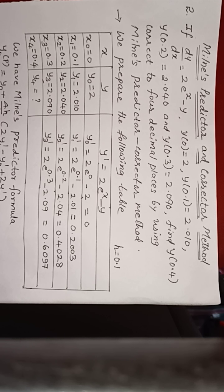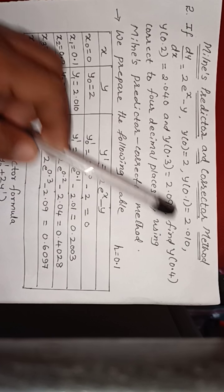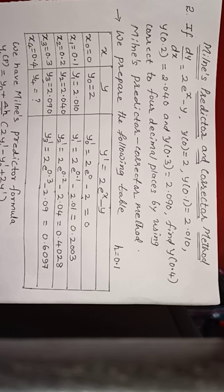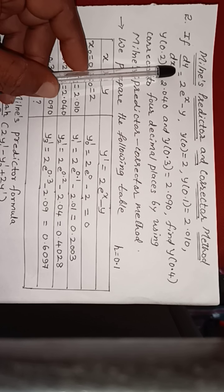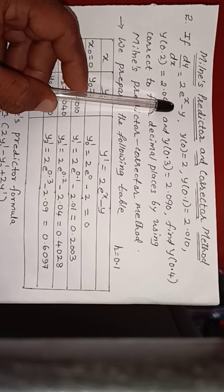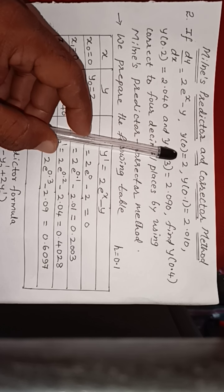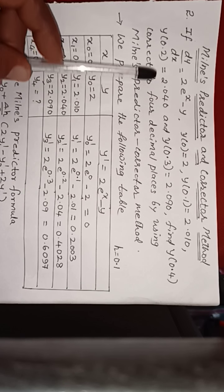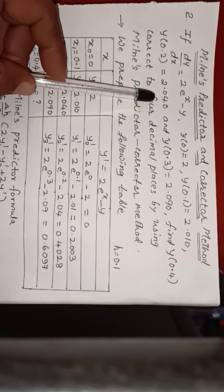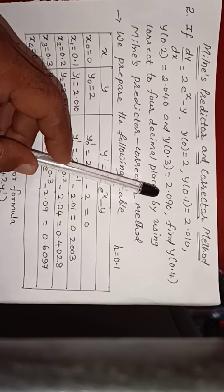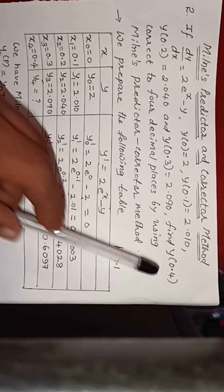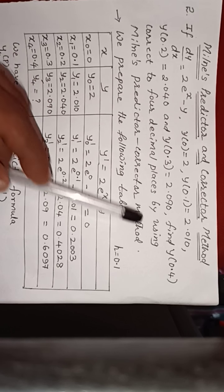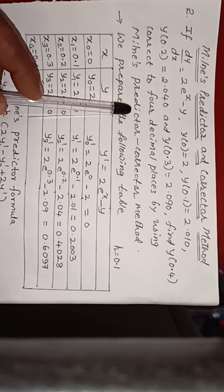Moving to the next session. It is video number 48. Topic is Milne's Predictor and Corrector Method for 3rd Semester B students. Next question: if dy/dx is equal to 2 into e raised to x minus y, given y(0) = 2, y(0.1) = 2.010, y(0.2) = 2.040, and y(0.3) = 2.090. Find y(0.4) correct to four decimal places by using Milne's Predictor and Corrector Method.